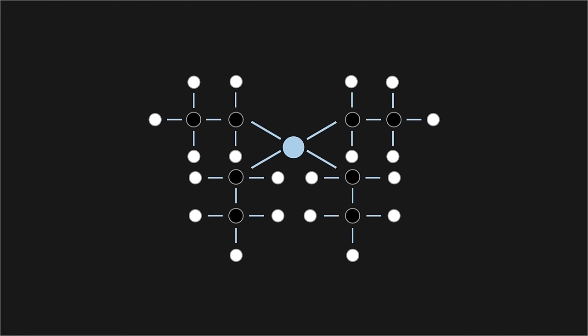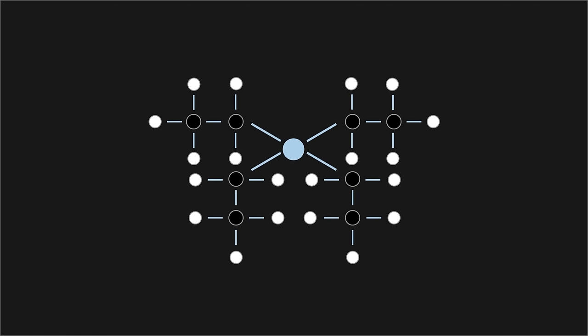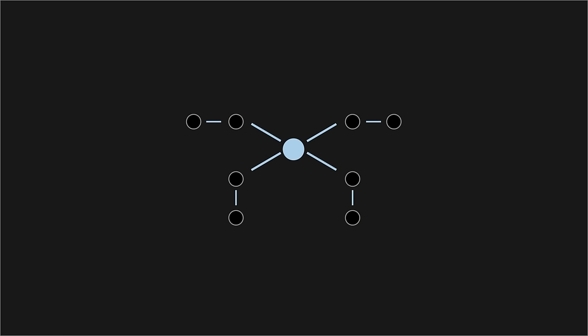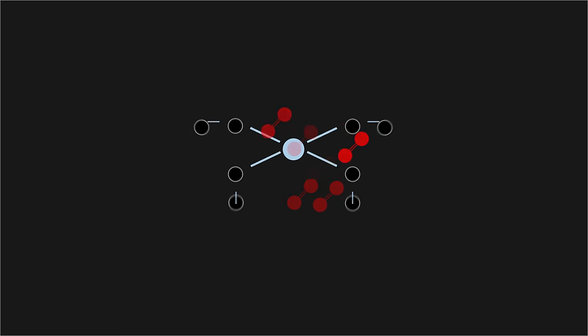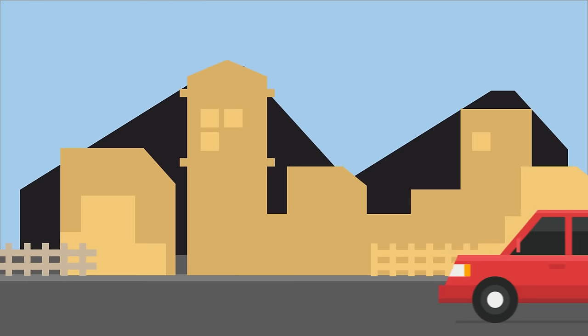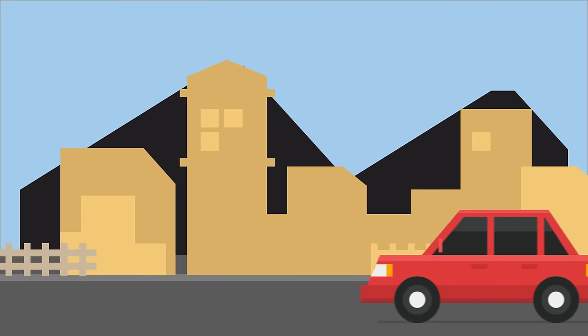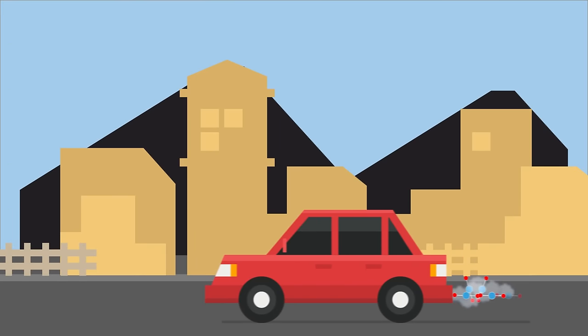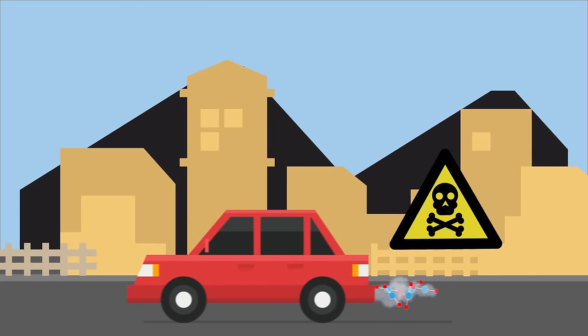The lead addition helped the petrol to burn smoothly, but the lead atoms combined with oxygen, forming lead oxide. This came out of the exhaust pipe as a fine dust and is very toxic.